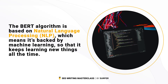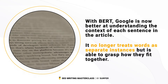BERT — B-E-R-T. The BERT algorithm is based on NLP, which stands for Natural Language Processing. It basically means it's backed by machine learning and not only a simple equation, and that it keeps learning new things all the time. With BERT, Google is now better at understanding the context of each sentence in an article. It no longer treats words as separate instances, but is able to grasp how they all fit together as a whole. It helps Google comprehend long-tail keywords and niche topics that could otherwise be misinterpreted.